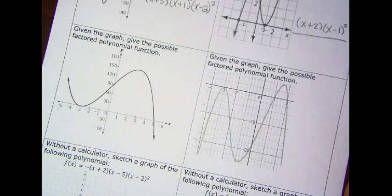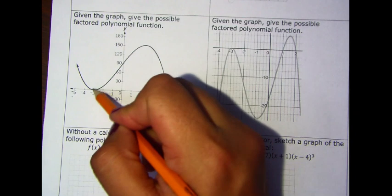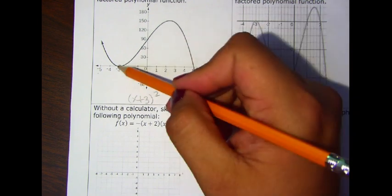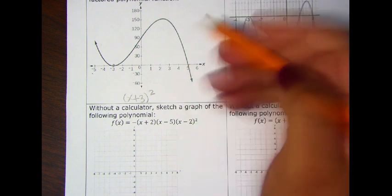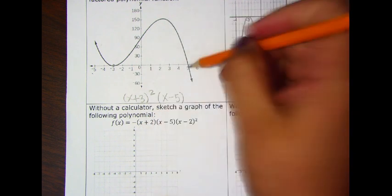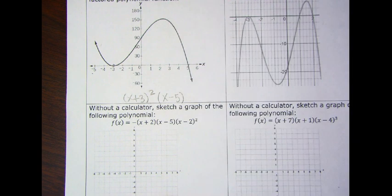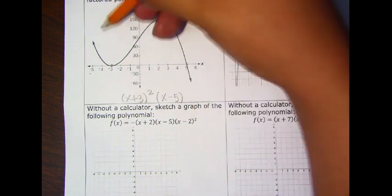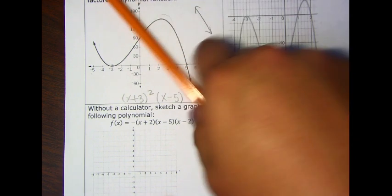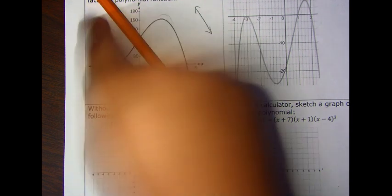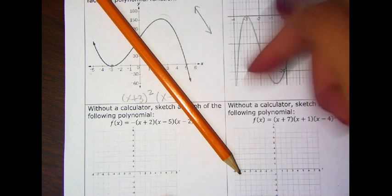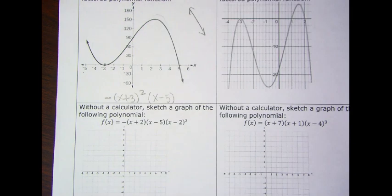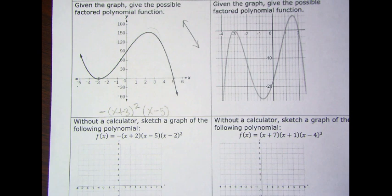Let's try one more example. Looking at this graph, at negative 3 it's touching and turning, so we write x plus 3 to the second power. Then it goes up and crosses around 5, so we write x minus 5 as our factor — it goes through, so we leave it as is. We can confirm these are the only factors because of the degree — we have two turns. The end behavior looks like a negative line: approaching positive infinity to the left and negative infinity to the right, so we put a negative in front. Just practice to get this topic of multiplicity — I hope this video helps.